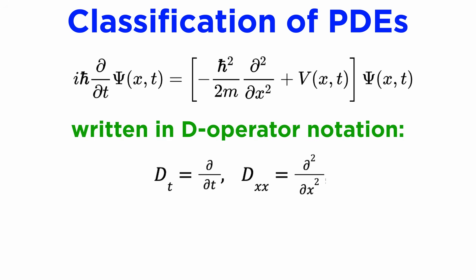For short, differential operators can be written using a capital D and a subscript to indicate which variables they are differentiating with respect to. So here, the term on the left would be D sub t, and the middle term has D sub x x. This is called the D operator notation,